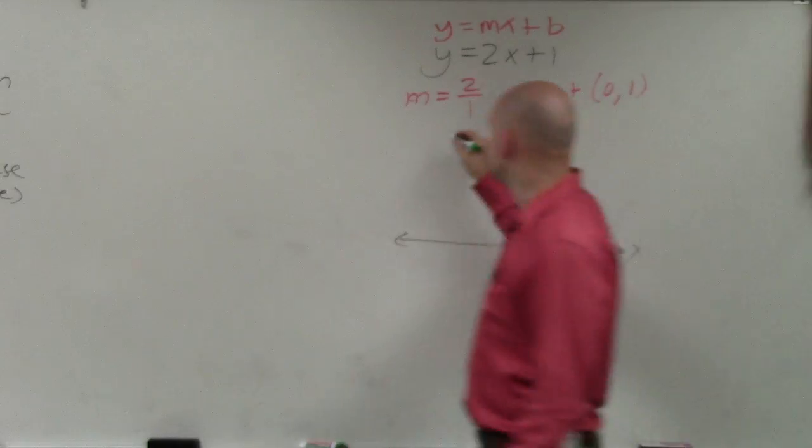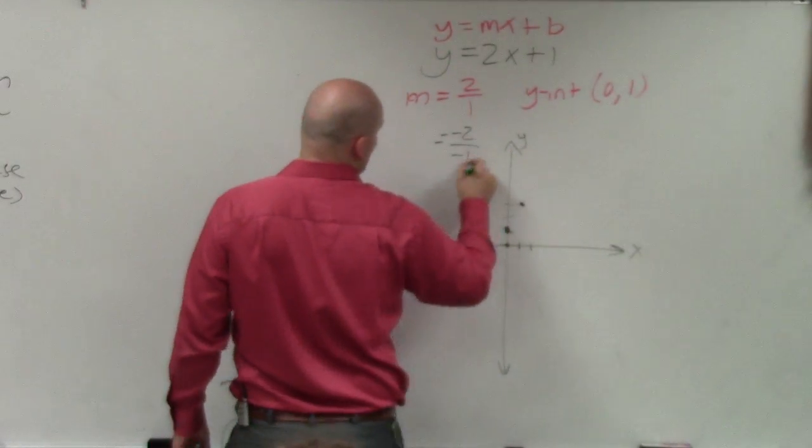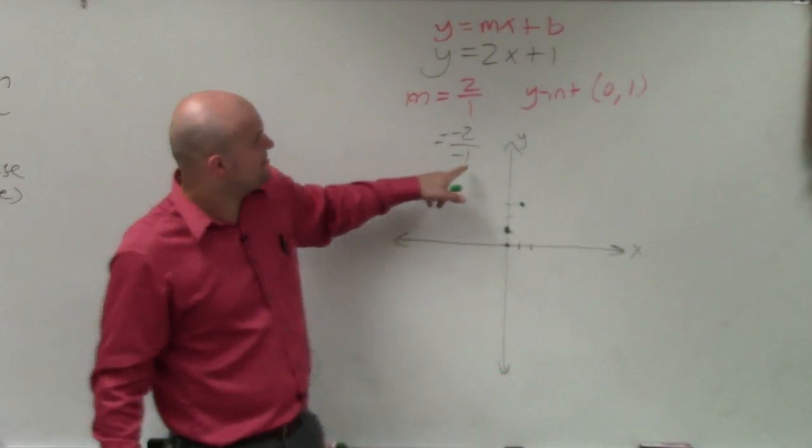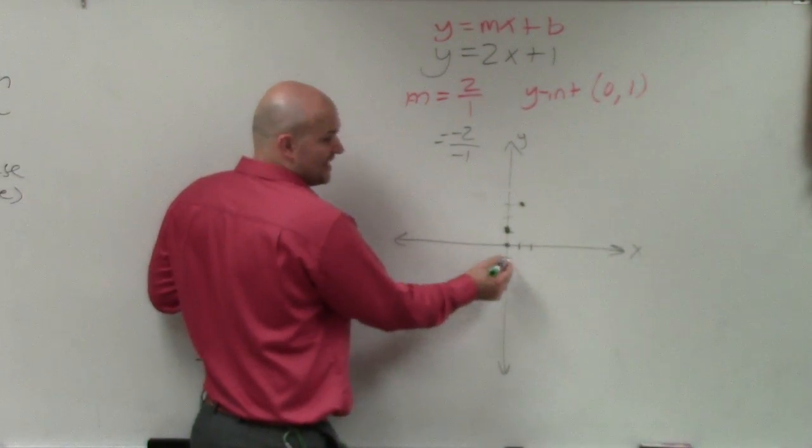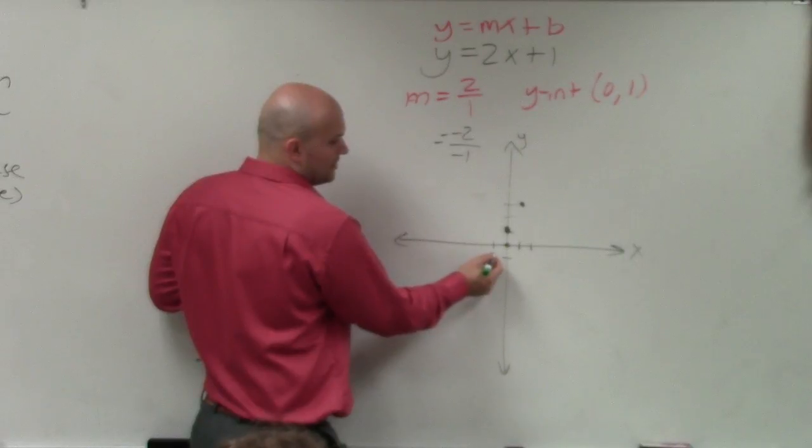You could also think of this as a negative 2 over negative 1, because negative 2 divided by negative 1 still gives you positive 2. And then you could go down 2, a rise of negative 2, and a run of negative 1.